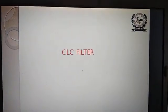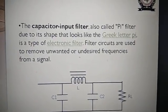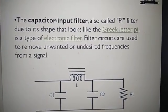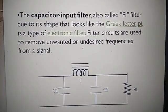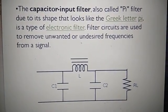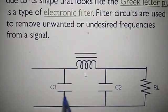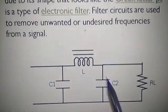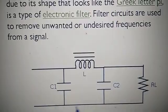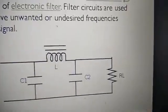Now we will go for the CLC filter, also called the pi filter. It is also called the capacitor input filter. Due to its shape that looks like the Greek letter π, it is a type of electronic filter. Filter circuits are used to remove unwanted or undesired frequencies from a signal. This is a C1, L, C2 configuration — it looks like a pi shape, and here is the load resistance RL at the output.